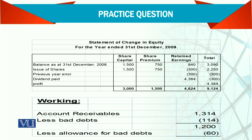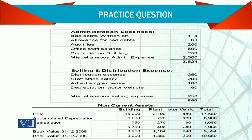The remaining balance is 9,124, and then they start working through how these figures appear in the balance sheet where workings are required. Accounts receivable is 1,314 minus bad debts, and then the allowance is 5% of 1,200 — that is, 5% of the debt.